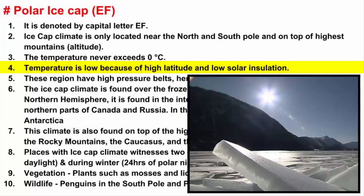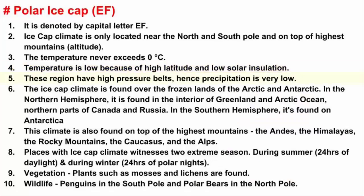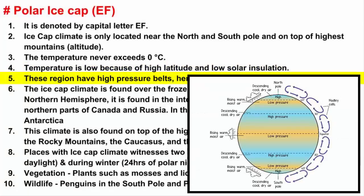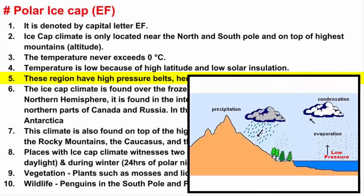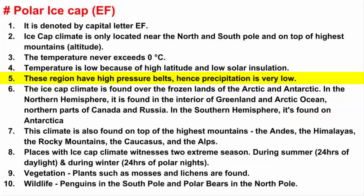The sun rays that do reach the surface are efficiently reflected away by the white permanent cover of snow and ice. Since this region is very cold and cool temperature is associated with high pressure, that makes it impossible for water to evaporate and then condensation to take place, which reduces the chance of precipitation.